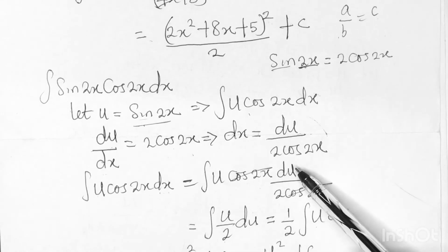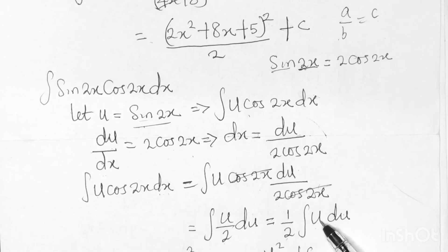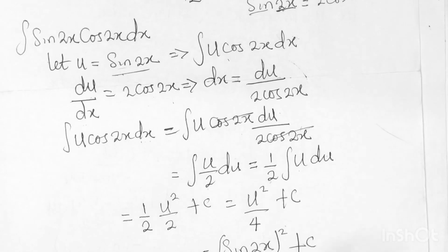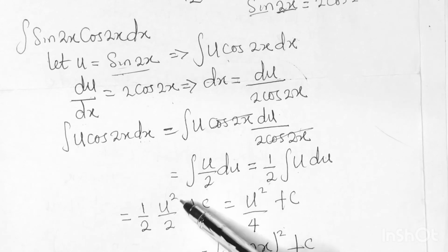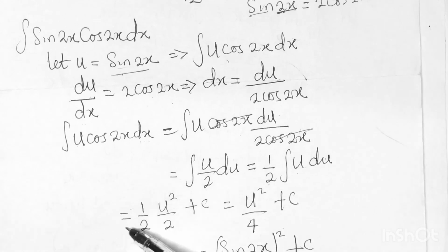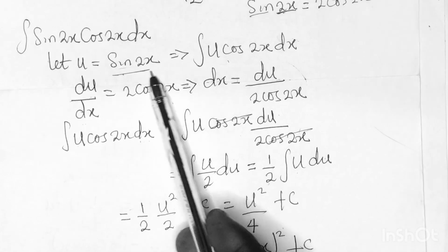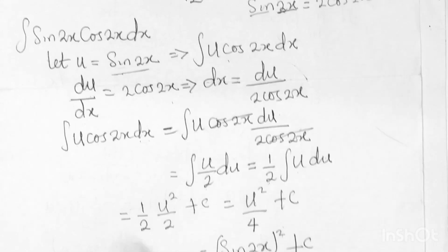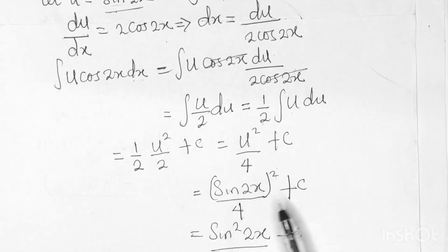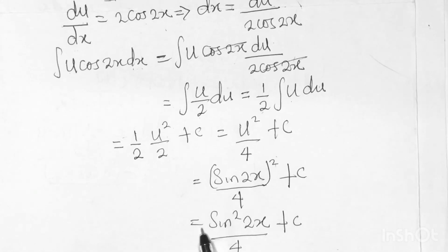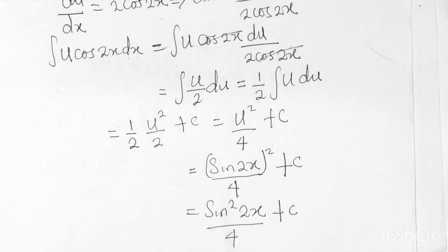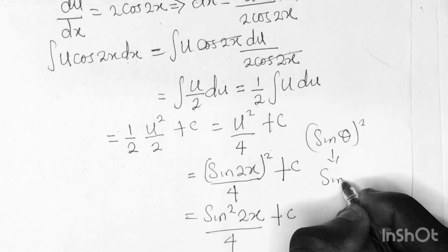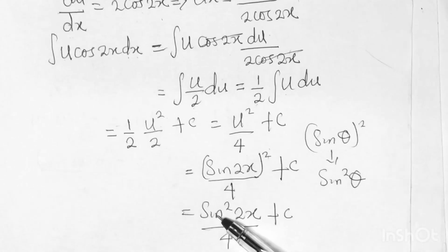Integrating u gives u²/2, so 1/2 · u²/2 = u²/4. Substituting u = sin2x back gives sin²(2x) / 4 + C. Note that in mathematics (sinθ)² is the same as sin²θ, so the final answer is sin²(2x) / 4 + C.